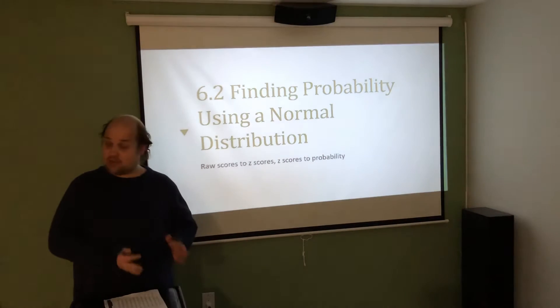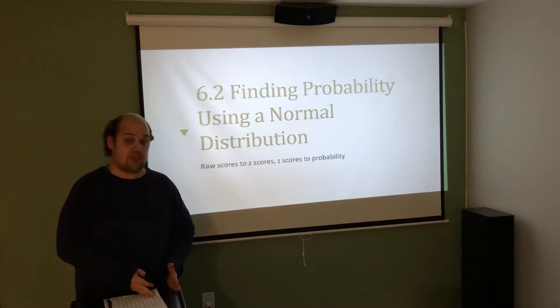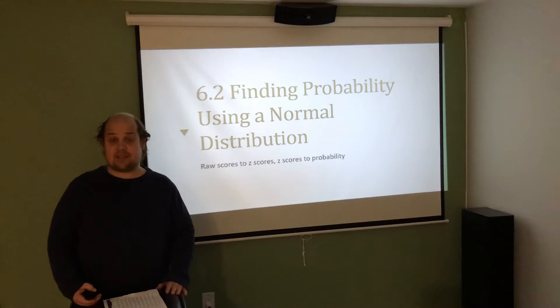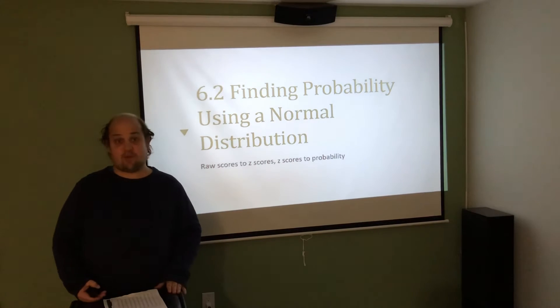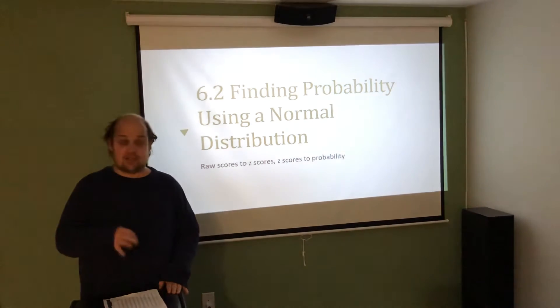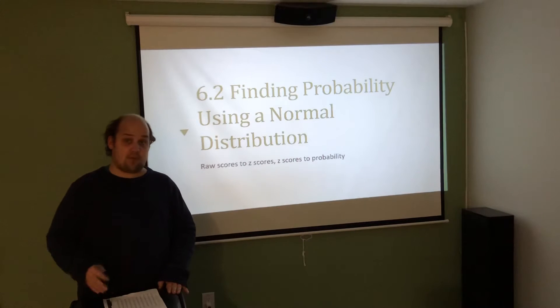So there's three different skills being used here. The first skill is picking out the important information from a word problem. The second skill is converting that information to a z-score using the z-score formula. The third skill is using the table to convert a z-score to a probability.